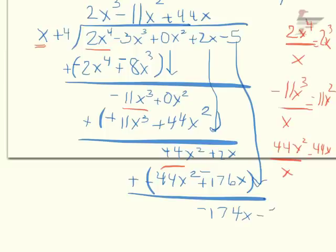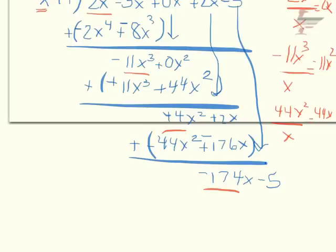I carry down my last piece, minus 5. My last division is negative 174x divided by x — the x cancels out — so it's minus 174, and that goes up top. Then I multiply: negative 174 times x is negative 174x, and negative 174 times 4 is negative 696.